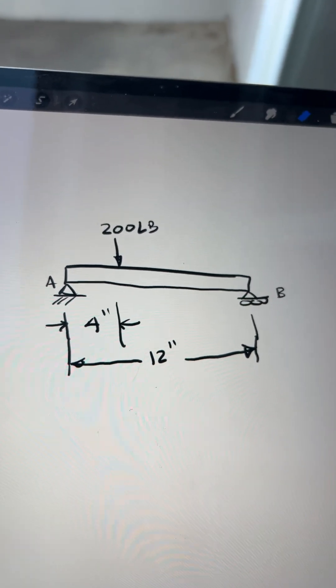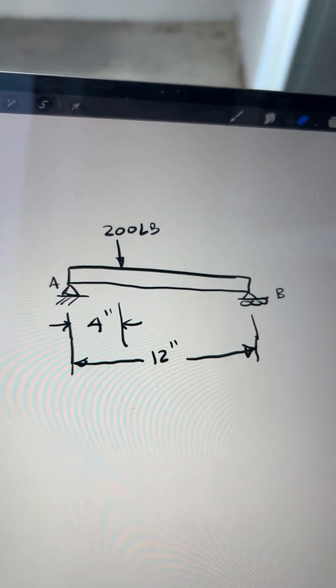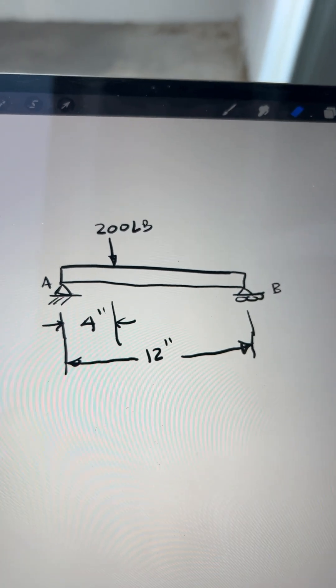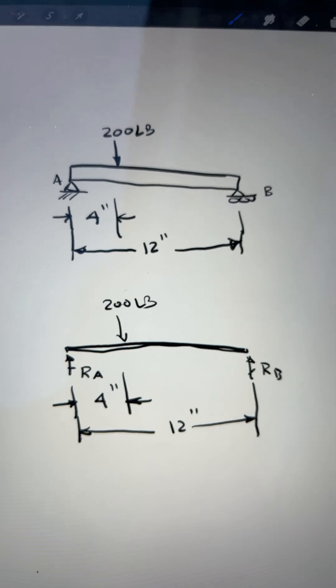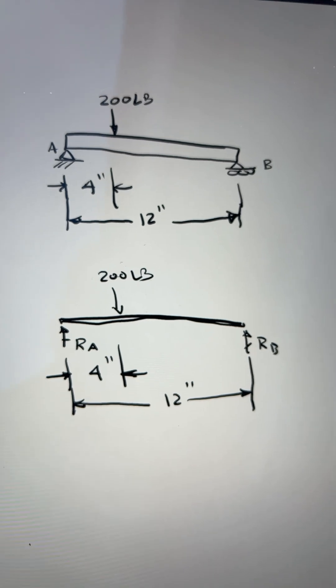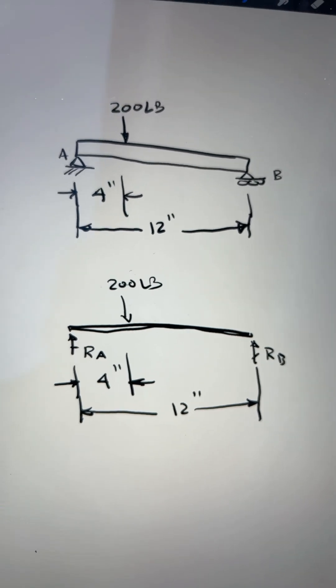However, it's better to first re-sketch this as a free-body diagram before we sum moments like this. Notice we re-sketched everything, drew the reaction forces and the dimensions that we needed.